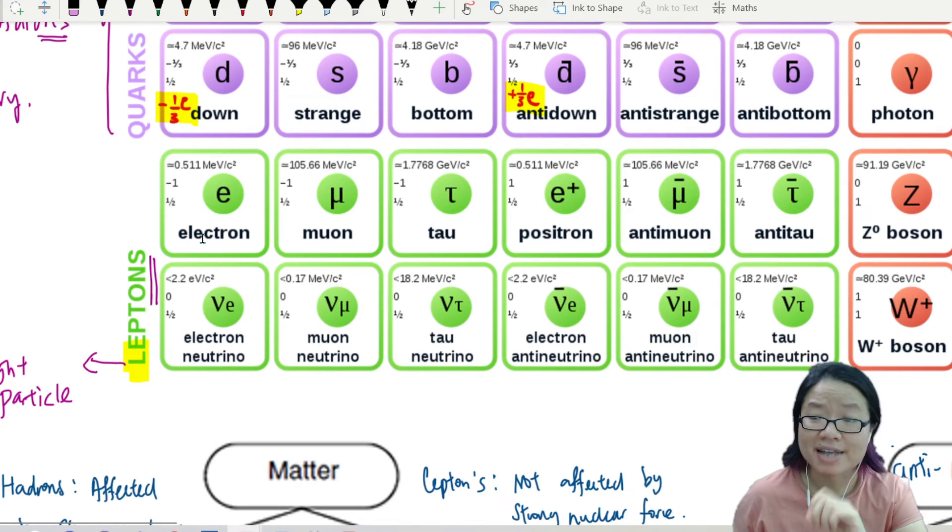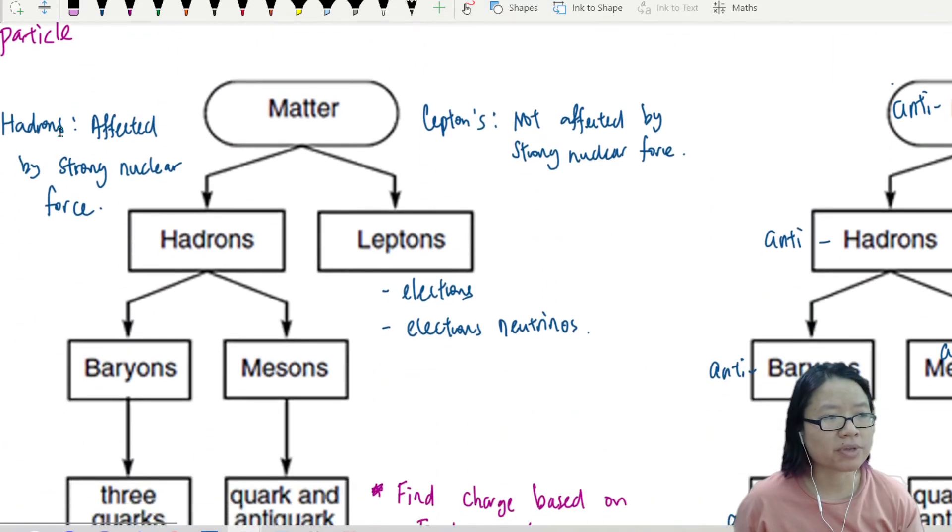These are leptons. They are very light, not much mass. So these are all leptons. And then you also have the anti-particles here. So in other words, if you want to think about hadrons,